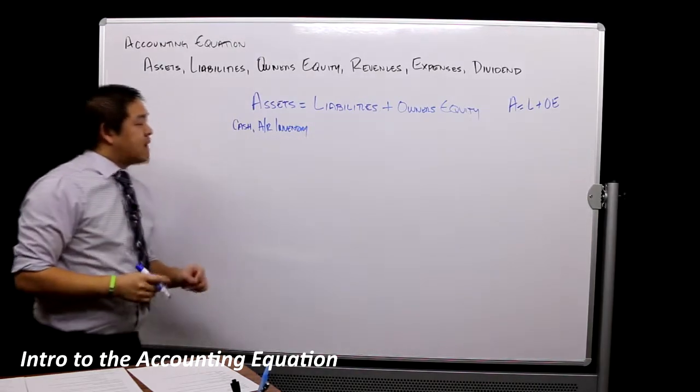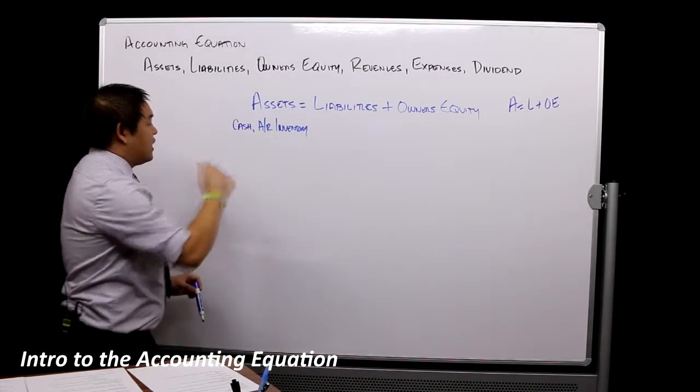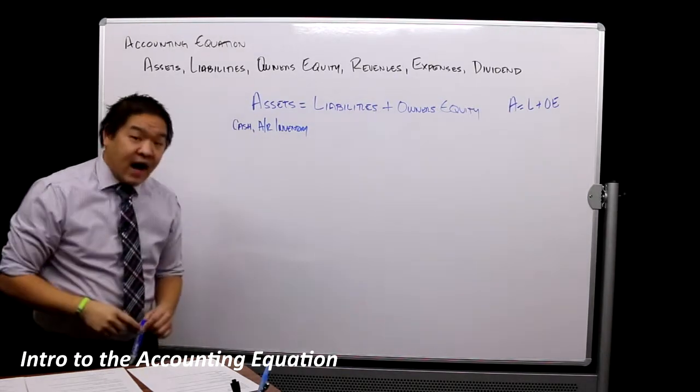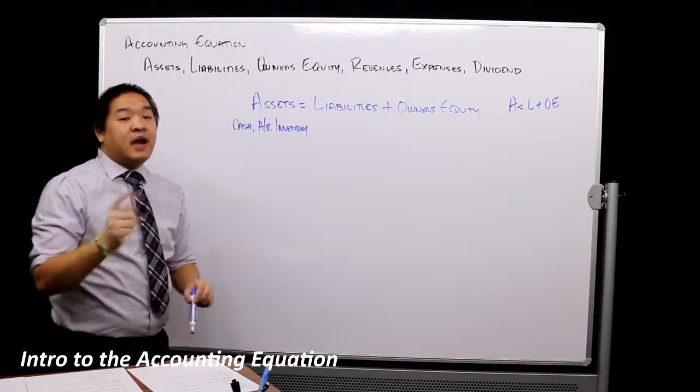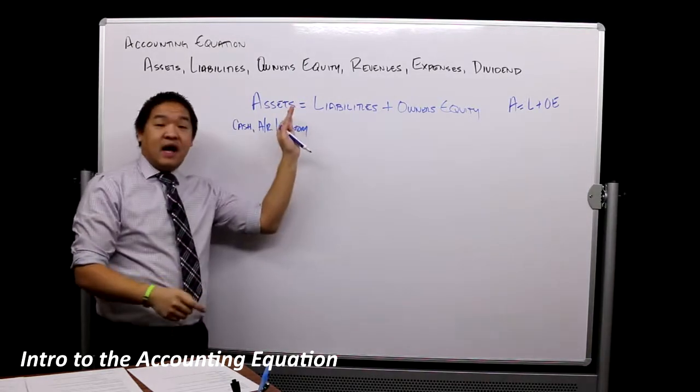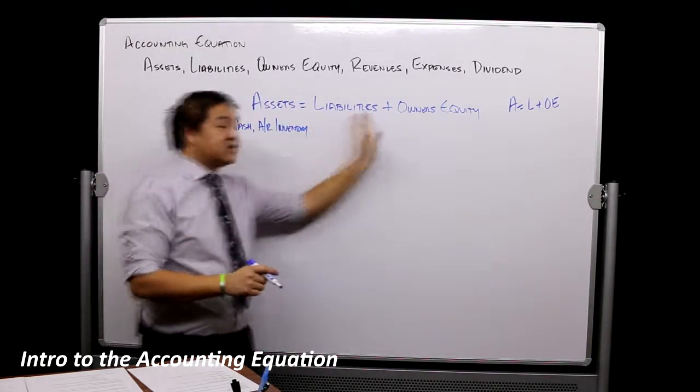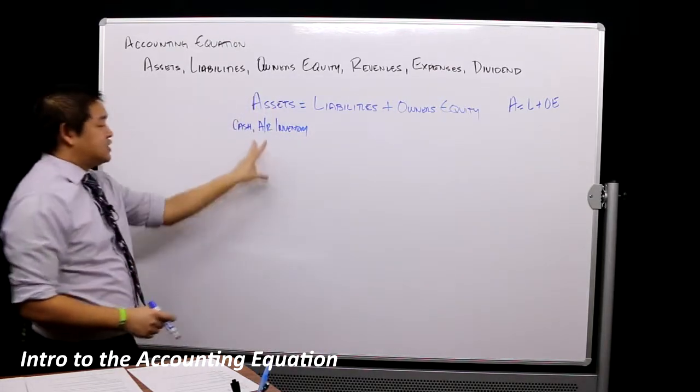Remember our example a long time ago about buying a hundred shirts at a dollar a piece? I might have paid cash, so cash comes down for those hundred shirts, but I received in return a hundred dollars of inventory, so that goes up. Notice my equation would still balance because nothing changed here.